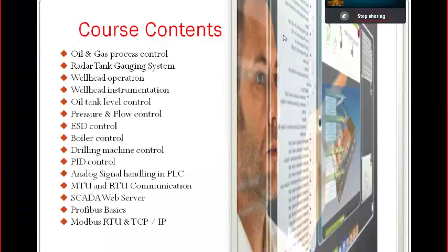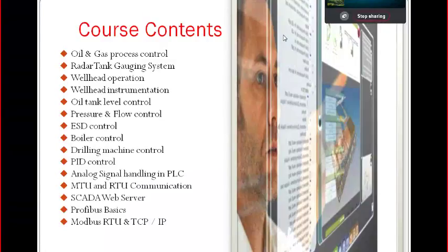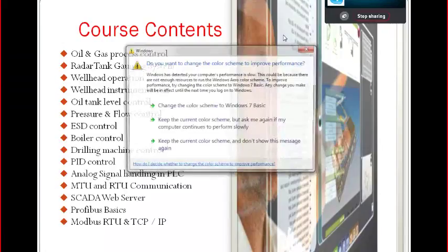There is one terminology when you talk about instrumentation: radar tank gauging systems. These are very popular in the oil and gas sector. Companies like Shell and other refineries have a lot of radar tank gauging systems to measure levels. These are normally used for storages.